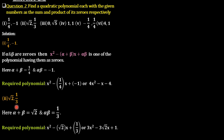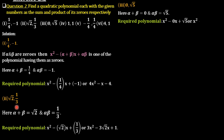Next question: 0 comma root 5. Here alpha plus beta equals 0 and alpha·beta equals root 5. The required polynomial is x² minus 0·x plus root 5. Since the middle term is zero, we can rewrite it as x² plus root 5.